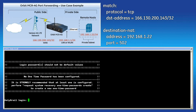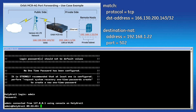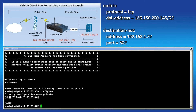Now I'll walk you through how to set this up using the command line. Log into the device as admin and enter configuration mode. The first set of information to configure is the match criteria. For this rule set, we'll create rule number 1.